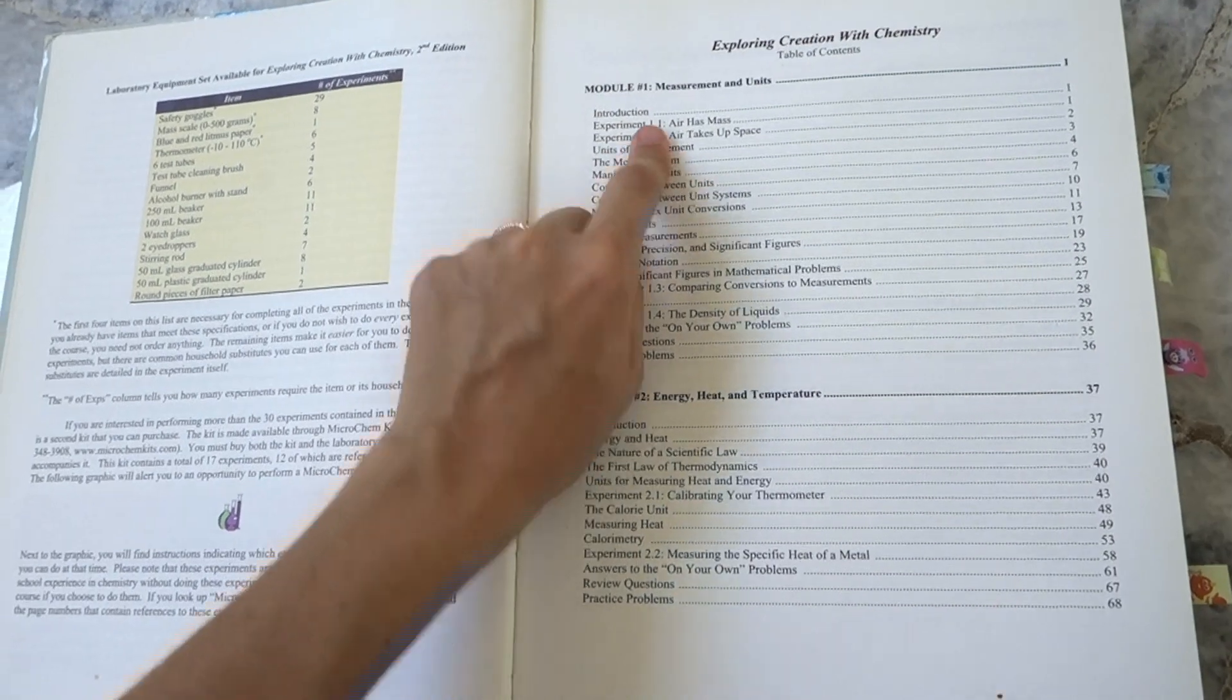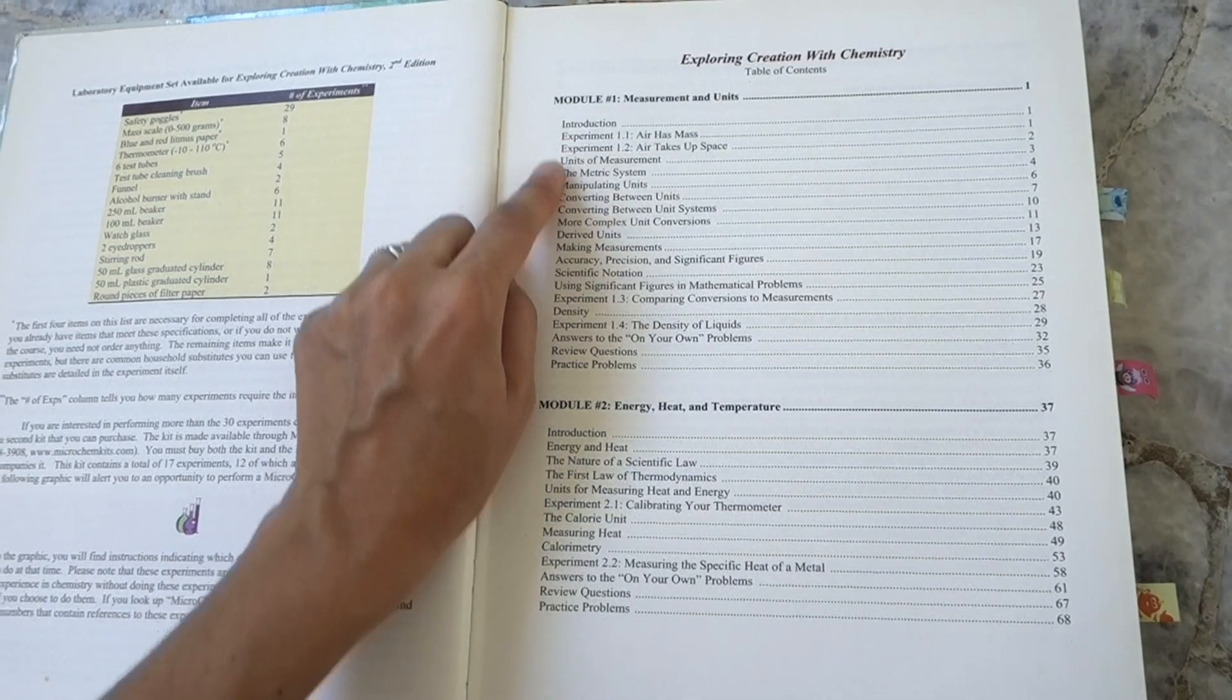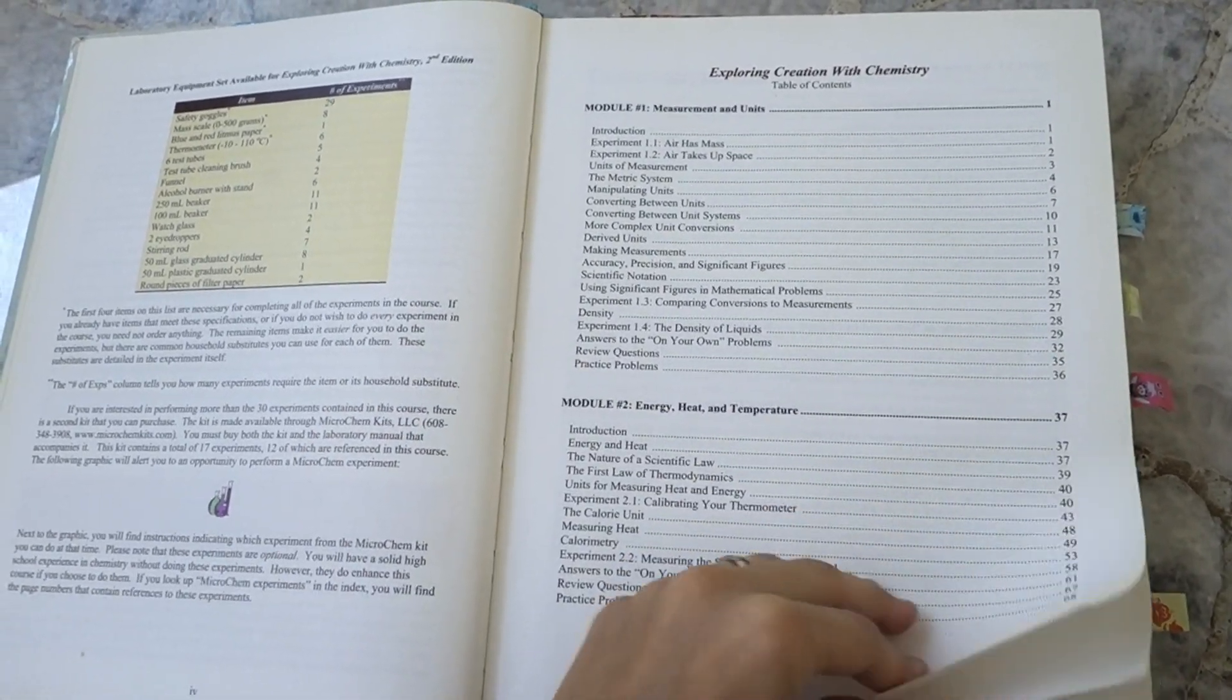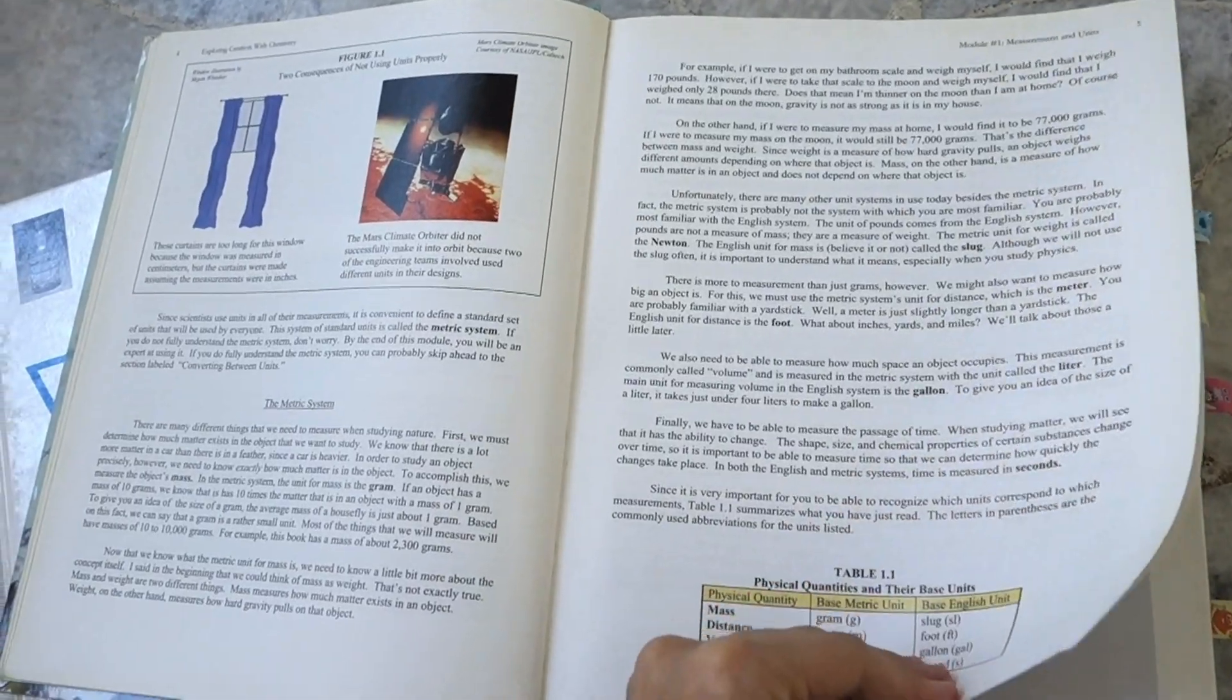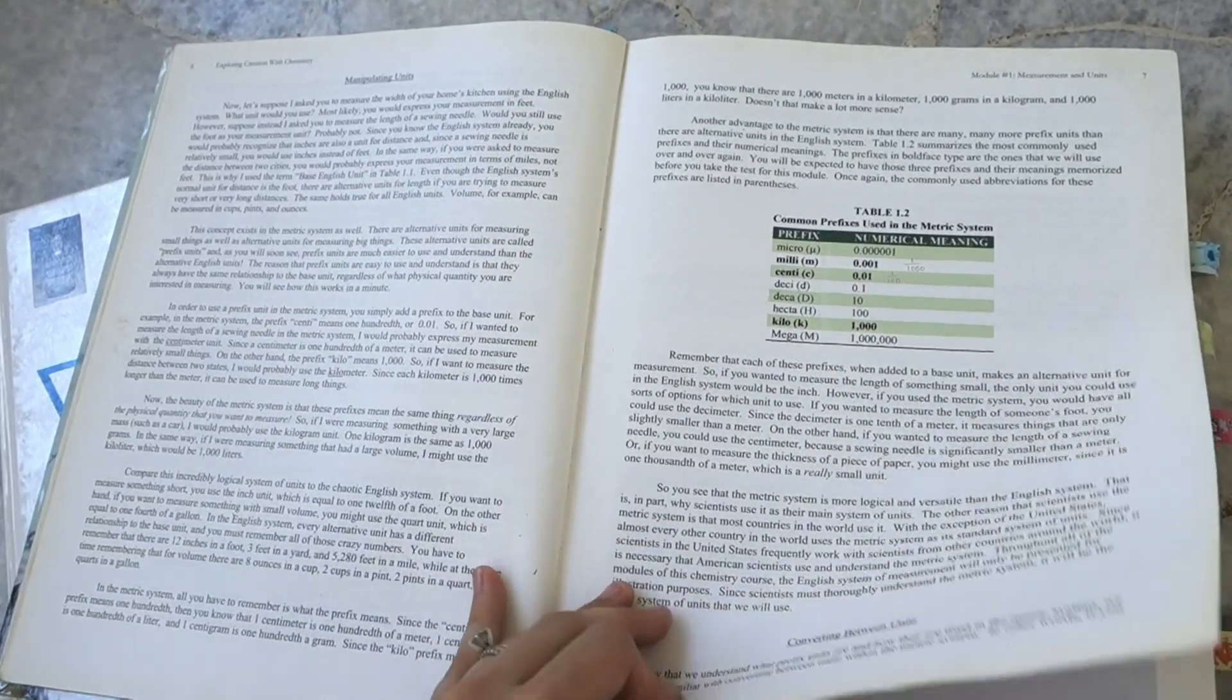So it's divided into modules on different themes. And within each module, there will be reading as well as experiments. There will be practice questions. At the end of the module, you get to review questions. And then you have a test after going through all the review at the end of your module.